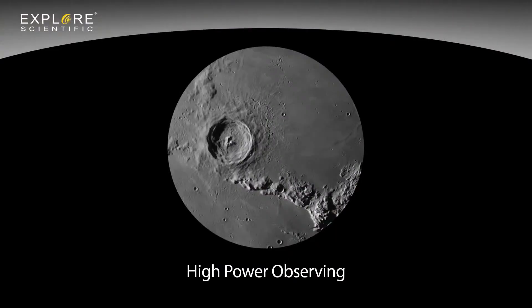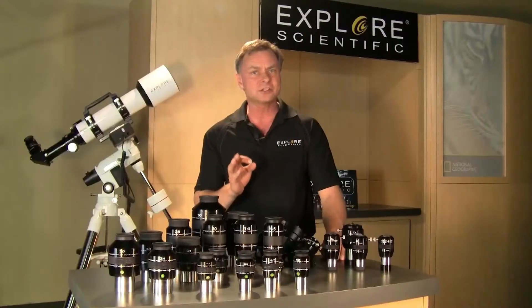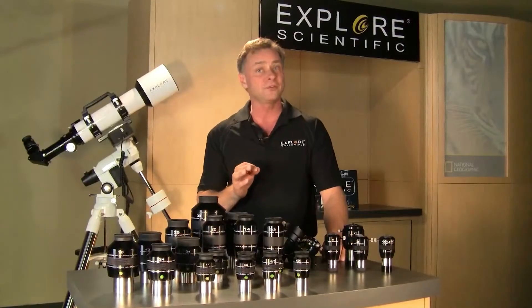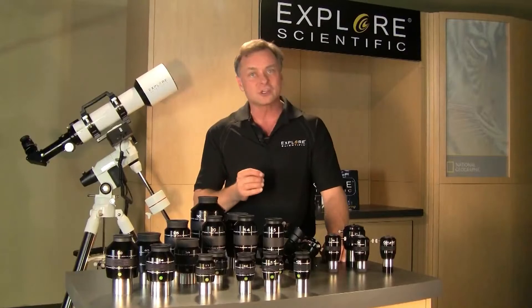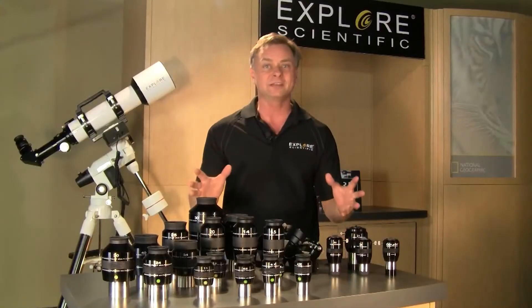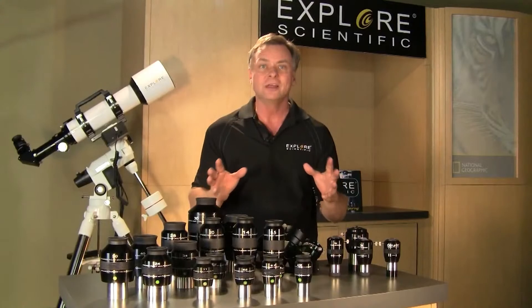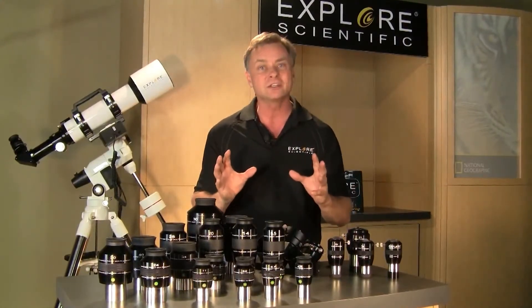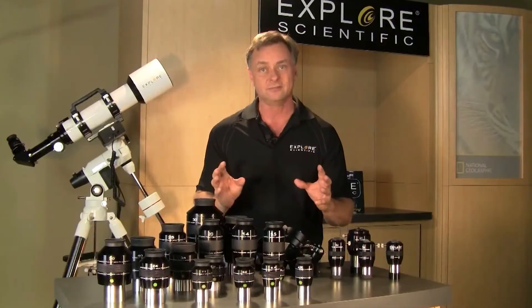But what about high power observing? Telescopes are also detail-resolving devices capable of focusing highly detailed images of objects. Under steady skies — good or perfect seeing conditions — and the right telescope and eyepiece, it's possible to visually observe incredibly fine features of bright objects like the planets and the moon. There's a limit to how much magnification you can use, based on atmospheric seeing conditions and the telescope's aperture. Having several eyepiece focal lengths from lowest to highest useful magnification will maximize your observing potential.